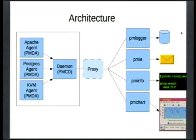The architecture of PCP looks something like this, where you've got a whole bunch of various agents that are talking to a collection daemon all in one box. This is where you can extend it with your own agents, and there's lots of agents that you can already enable and install by default. Then you've got a bunch of clients that can all talk optionally via a proxy over the network to the daemon and get their data and do various things with it.